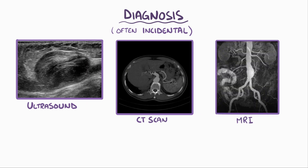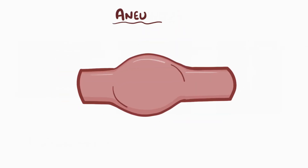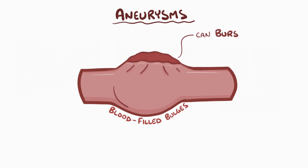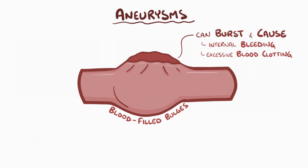If an aneurysm is present and large enough to cause risk, it can be treated surgically. In summary, aneurysms are blood-filled bulges that form in weakened areas of blood vessel walls. Left untreated, aneurysms can burst, causing uncontrolled internal bleeding or excessive blood clotting. Based on the size and location of an aneurysm, surgical treatment may be necessary.